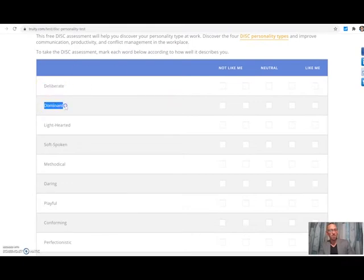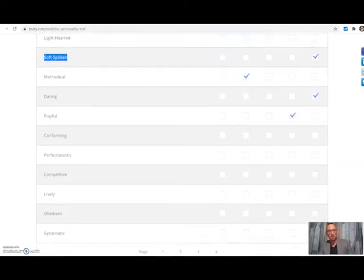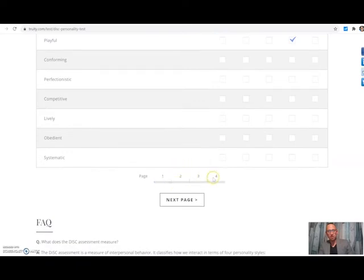Deliberate. Dominant. Light-hearted. Soft-spoken. And you're going to have to choose not like me or more in the middle, neutral or like me. And you are going to start filling out this assessment and how it describes you. As you get to the bottom of the page, you'll see that there are four pages. And when you've completed that, you will automatically get the results.